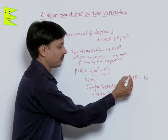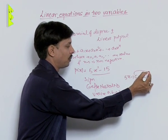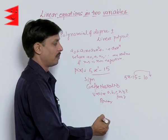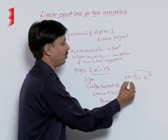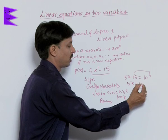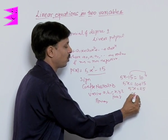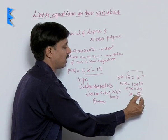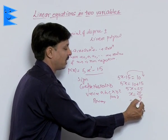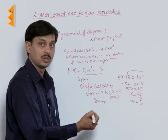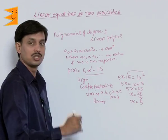In order to calculate that, we will transfer minus 15, that is the number, to the right hand side, and we will get 5x equals to 10 plus 15. Then 5x is equal to 25, or you can say x is equal to 25 upon 5, and finally you can say the answer of x is 5 under this situation.